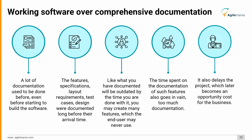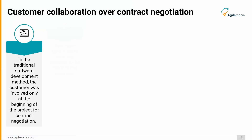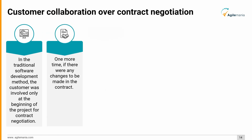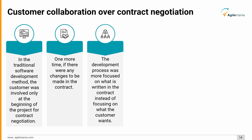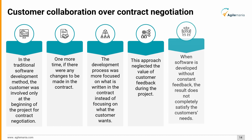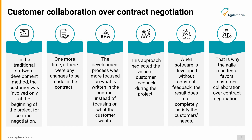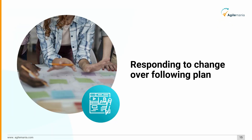The third value is customer collaboration over contract negotiation. In the traditional software development method, the customer was involved only at the beginning of the project for contract negotiation, and once more if there were any changes to be made in the contract. The development process was more focused on what was written in the contract instead of focusing on what the customer actually wants. This approach neglected the value of customer feedback during the project. When software is developed without constant feedback, the result does not completely satisfy the customer's needs. That is why the agile manifesto favors customer collaboration over contract negotiation.